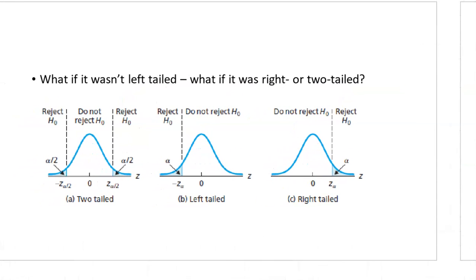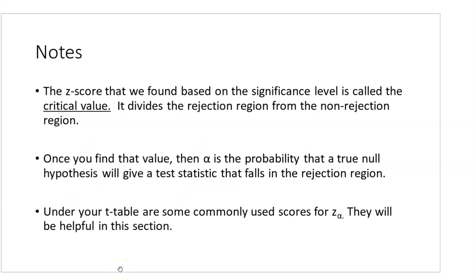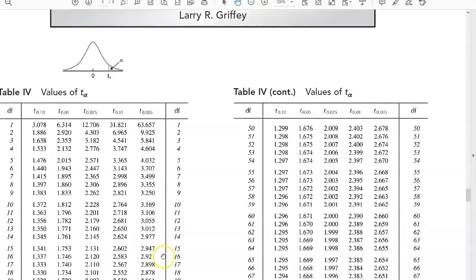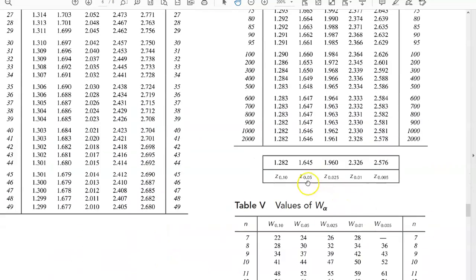Here's what it looks like for other types of tests. If it's a right-tailed test, the reject region is on the right and do-not-reject on the left. For a two-tailed test, we take the significance level and divide it in half. The Z-score found based on the significance level is called the critical value — it divides the reject and non-reject regions. Under the T-table, there are commonly used Z-alpha scores. For z.05, you can just read 1.645 from the bottom of the table; just remember to make it negative for a left-tailed test.